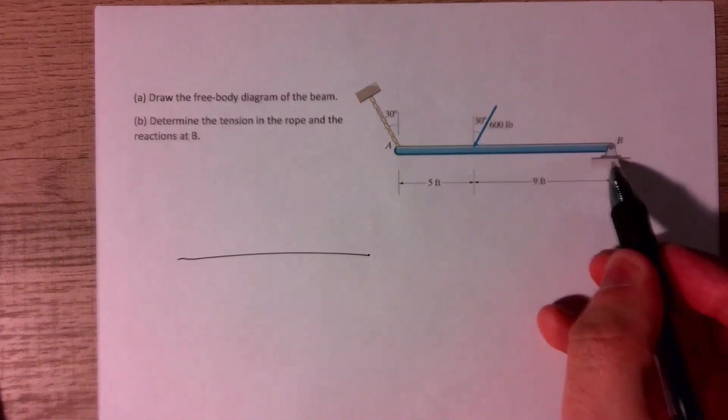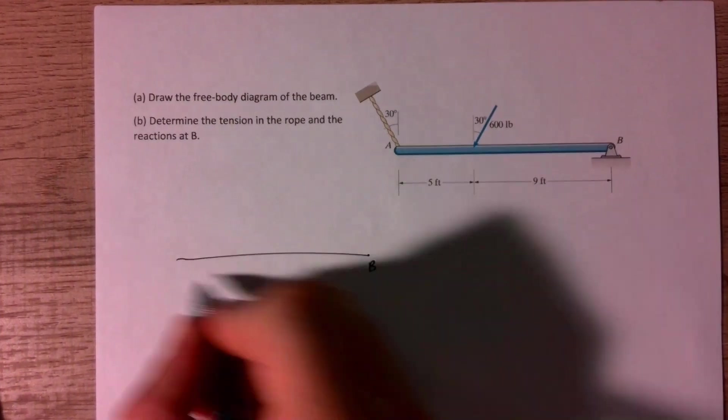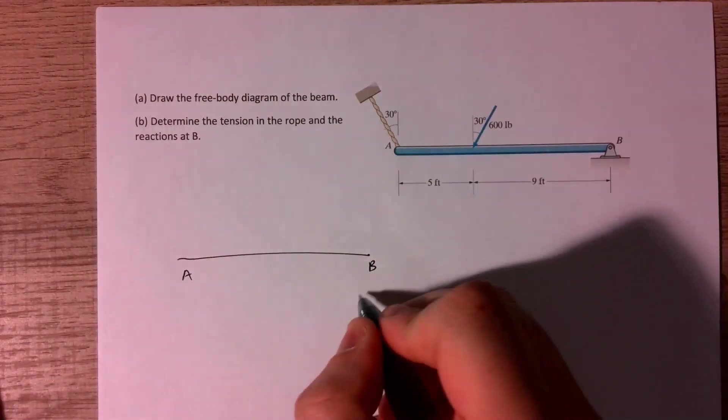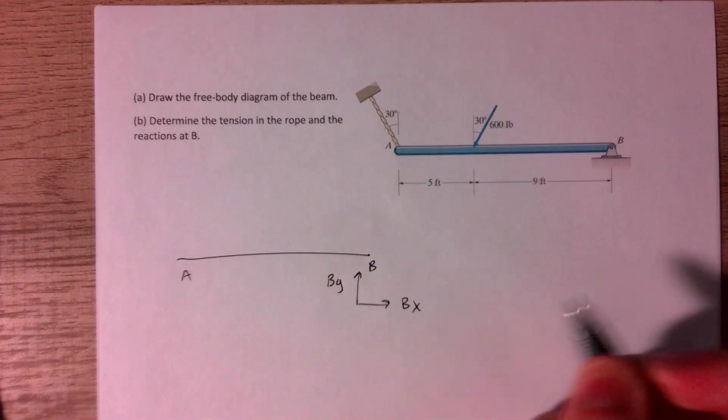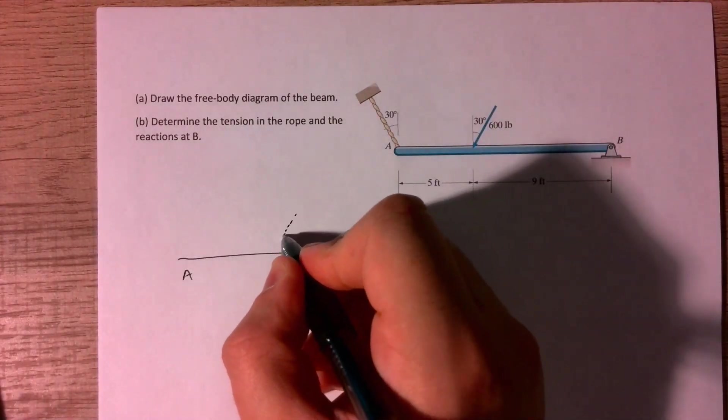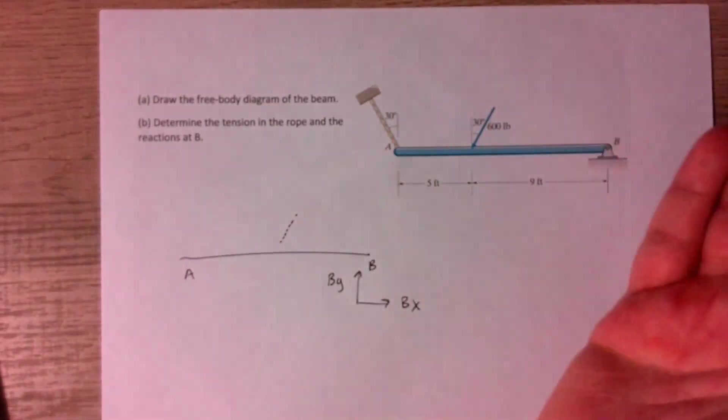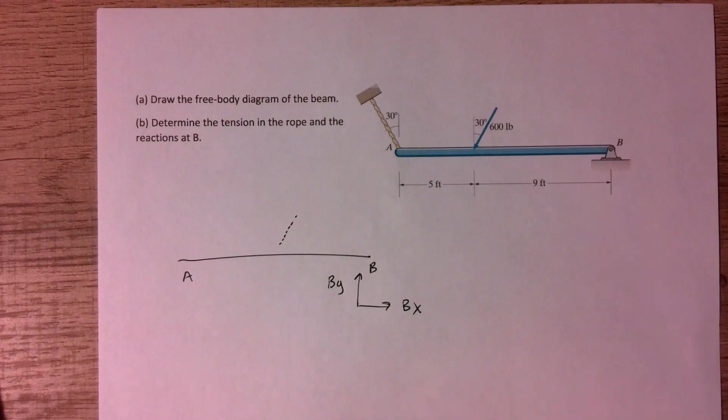So I have our beam here. Since B is a fixed support, we have reactions in both the X and the Y directions, so I'll draw them here. I'll label them BY and BX. And then I can move on to this point load here. So I'll draw that like this, because we're going to break that up into components. That makes it easier to sum our forces in the X and the Y direction.